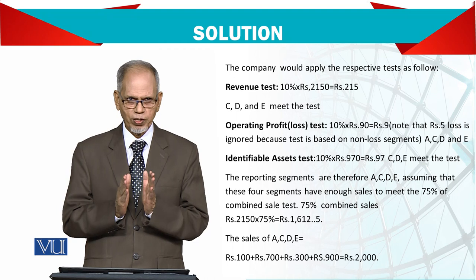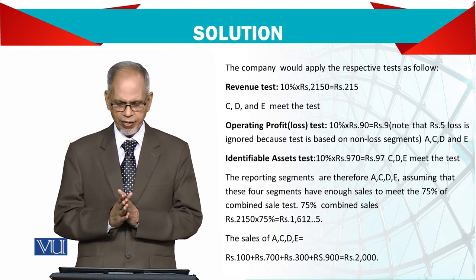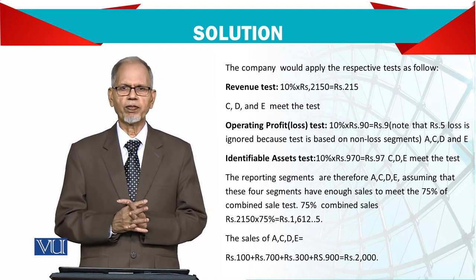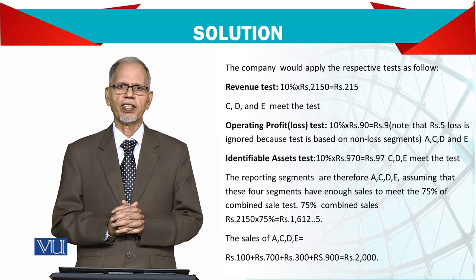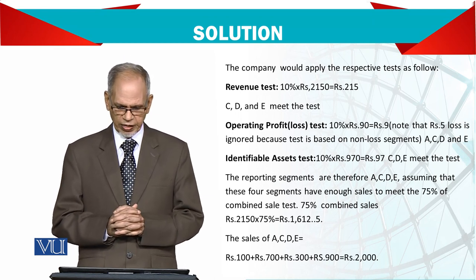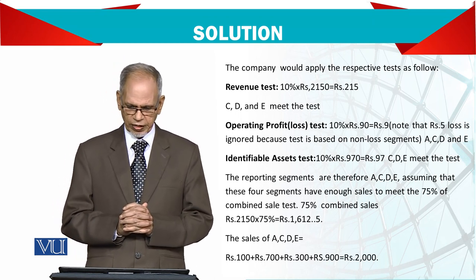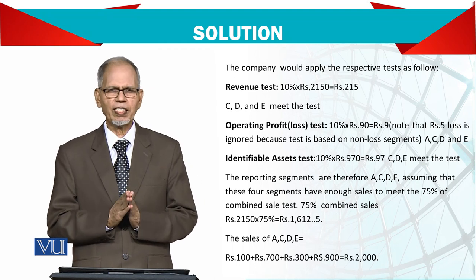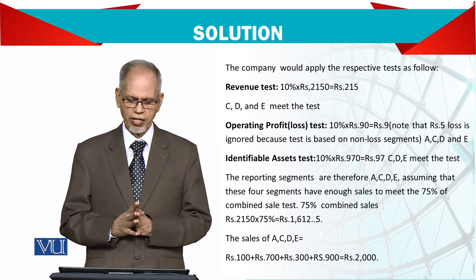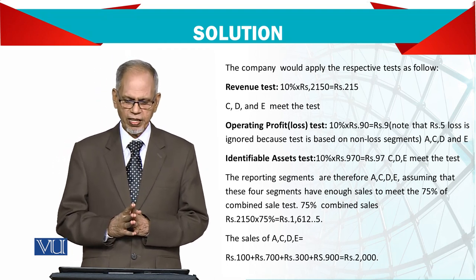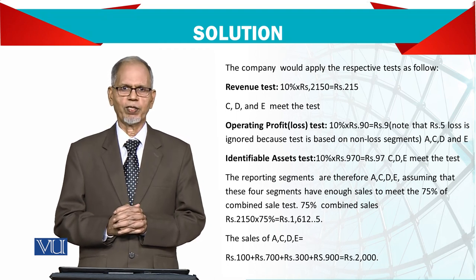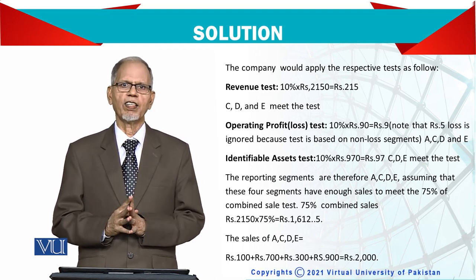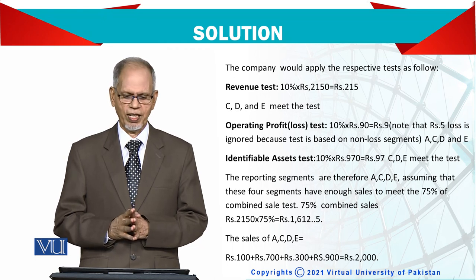This is the third test. We compare it to seventy-five percent of total turnover. Seventy-five percent of total turnover — 1,612.5. Adding up the reportable segments A, B, C, and D gives us the total turnover figure. It means it meets the criteria of total sales as well.